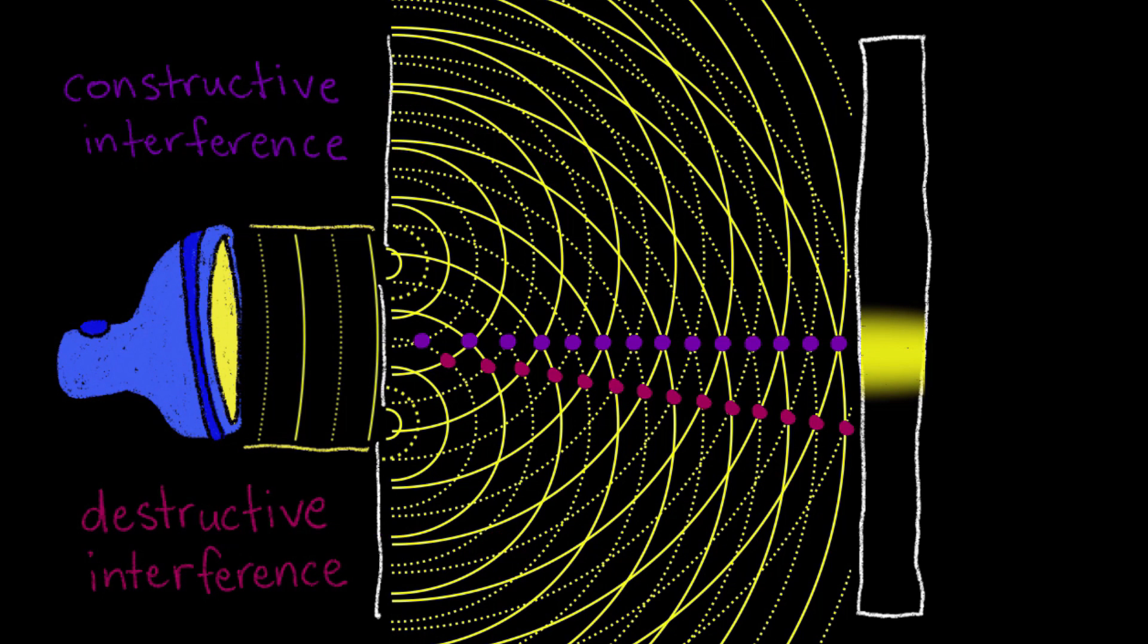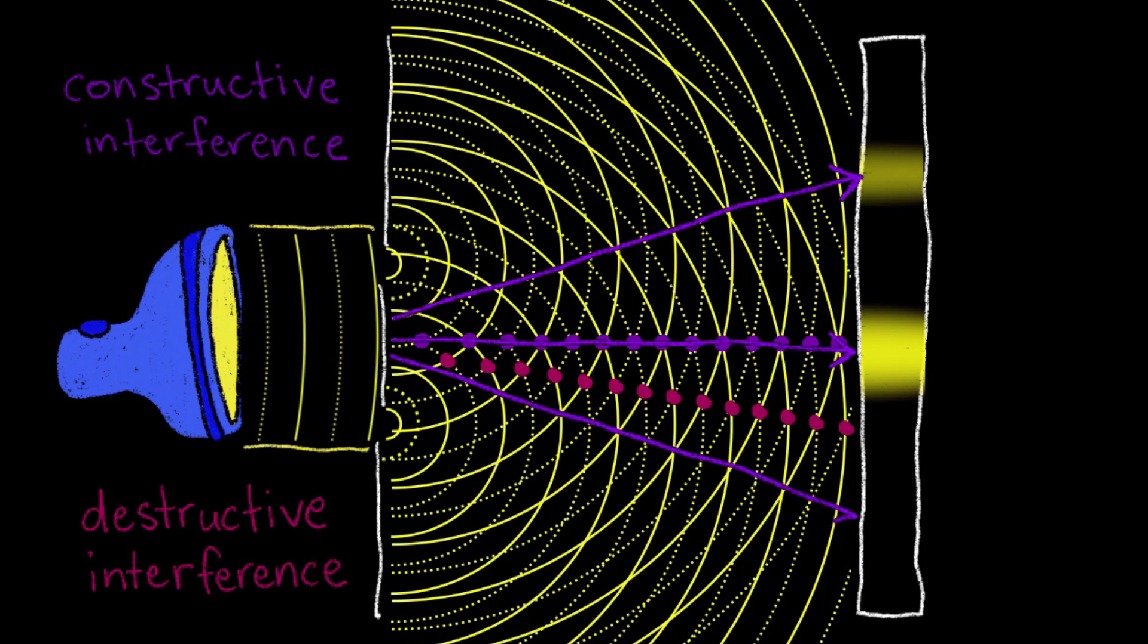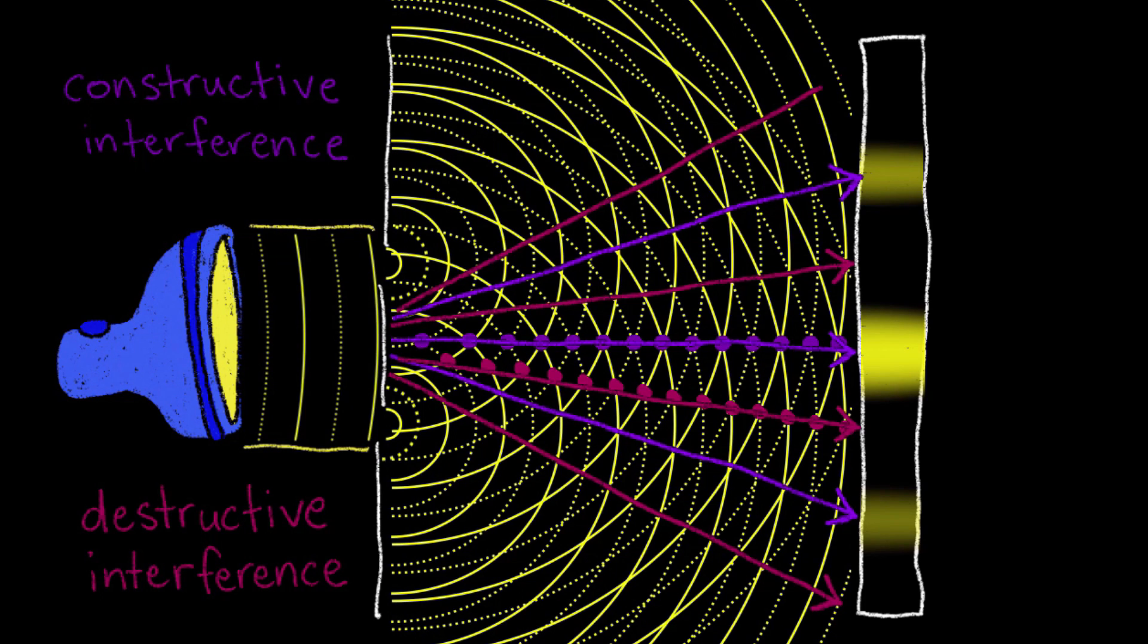So if we find all these paths of interference and follow them to the detection plane, we'll see a bright spot here, and here, and here, and a dark spot here, here, here, and here.